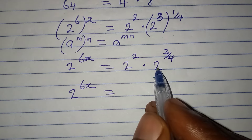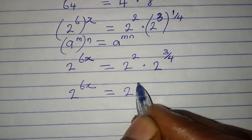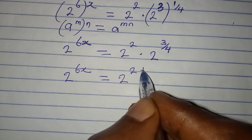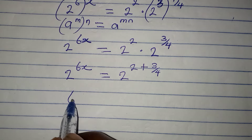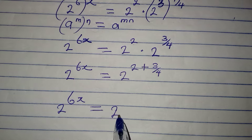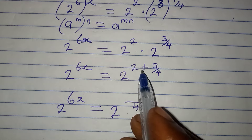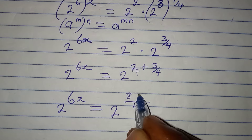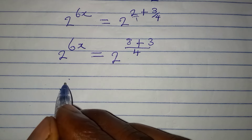2 to the power of 6x will equal — since we have the same base, pick one of them which is 2 — then I will add the powers, which will be 2 plus 3 over 4. The LCM is going to be 4, so 4 divided by 1 times 2 is 8, plus 4 divided by 4 is 1 times 3 is 3. So I will have 2 to the power of 11 over 4.